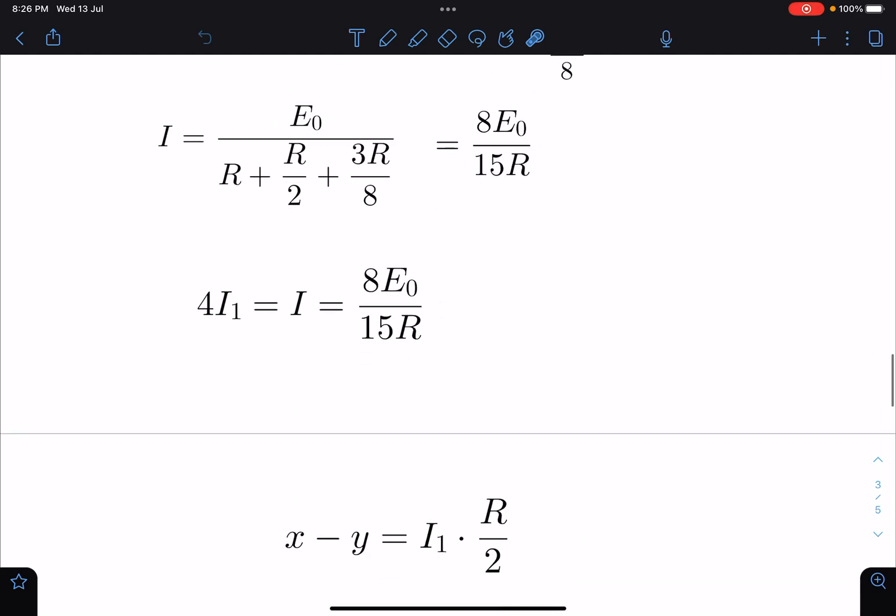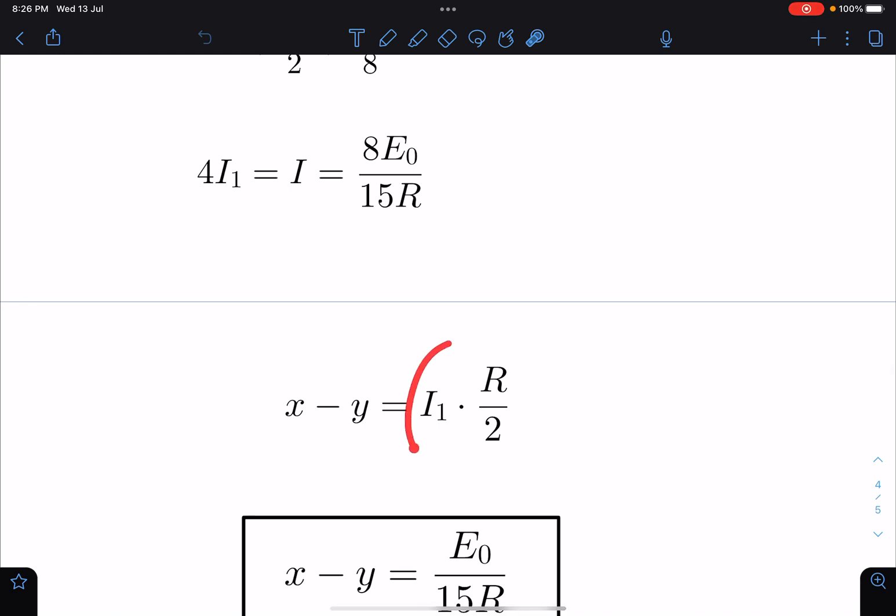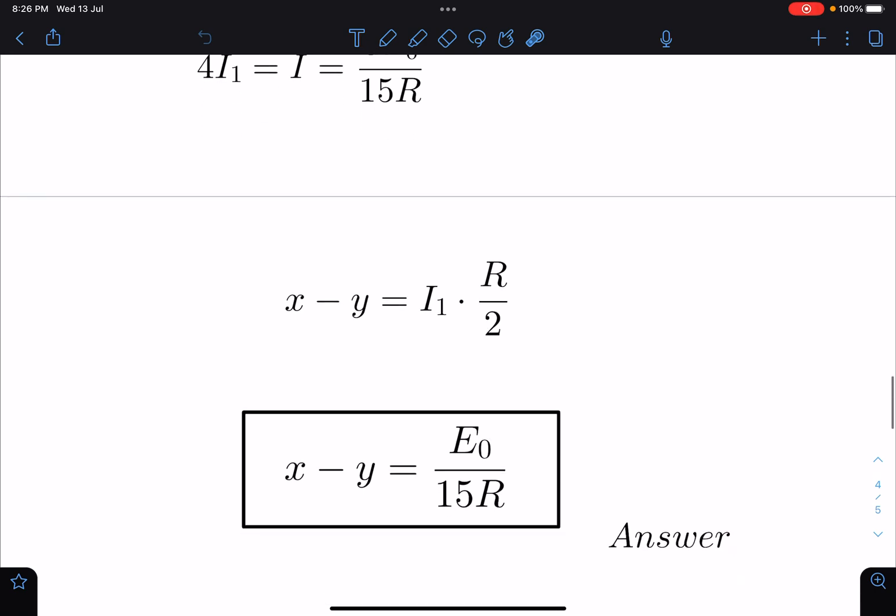Now here Vx minus Vy, basically x minus y, this is current times the resistance of this branch. So I have to find the value of i1 times R by 2. Now if I substitute the value of i1 which is 2E naught by 15R, I am going to get this answer as E naught by 15R, which is going to be the final answer for this problem.